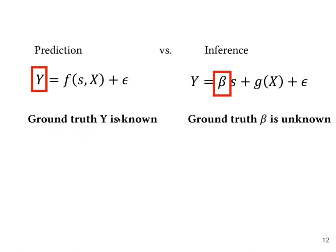What makes prediction tasks and inference tasks different is that we know and we observe ground truth for Y. But what we don't see is the ground truth for beta for each individual i, meaning that beta is a counterfactual whereas Y is directly observed.